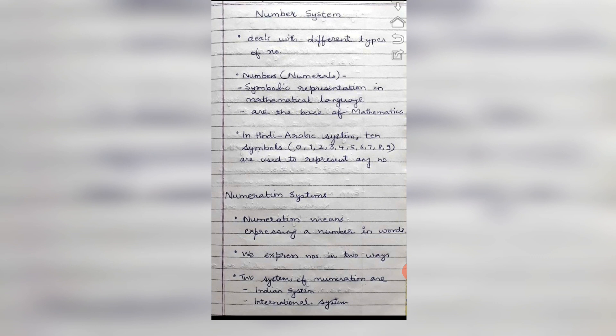Numeration of systems. Numeration means expressing a number in words. We express numbers in two ways. Two systems of numeration are: first is the Indian system, and second is the international system.